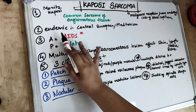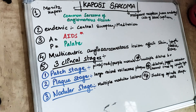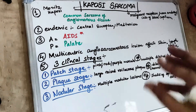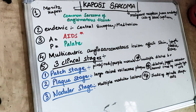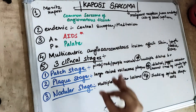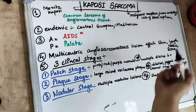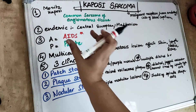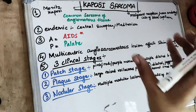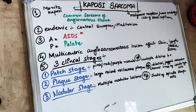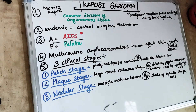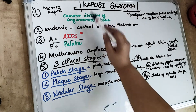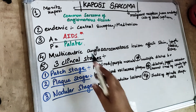Kaposi Sarcoma has an endemic relation, meaning it is more particularly present in central European or Mediterranean origin. There is a very important association in Kaposi Sarcoma — it is also associated with AIDS, similar to Non-Hodgkin Lymphoma. The most important association of AIDS is with Kaposi Sarcoma. To remember this easily: A for AIDS, P for palate.